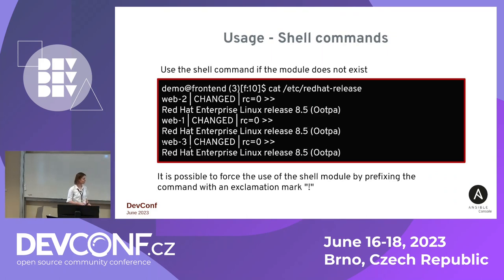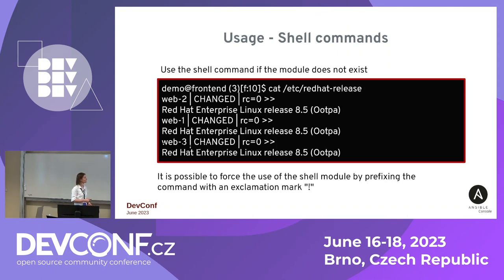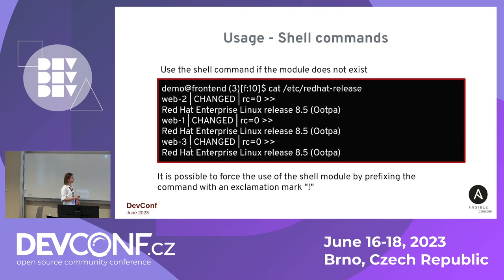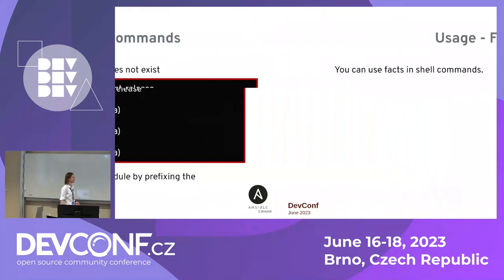Now let's jump to shell usage. It's not only Ansible commands that are available — shell is available too, and you can combine both. Here we're in the frontend group and we're just displaying the Linux release that's installed. You can also force the execution by using the exclamation mark if needed.